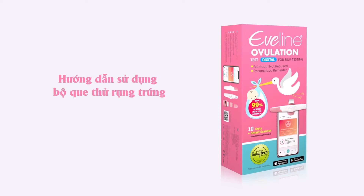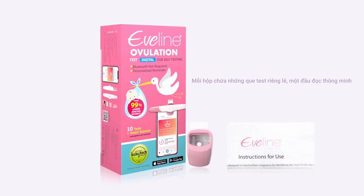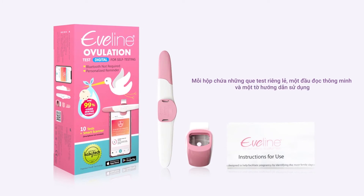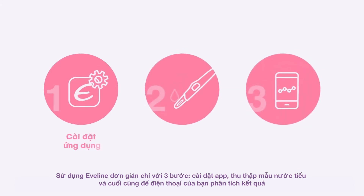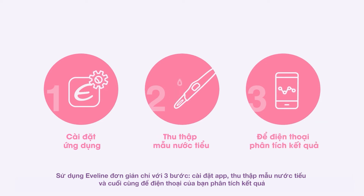How to use the EveLine Ovulation Test. Each box contains ovulation test strips, a smart scanner, and an instruction manual. Using EveLine is as easy as 1-2-3: set up the app, obtain a urine sample, and let your smartphone analyze the results.